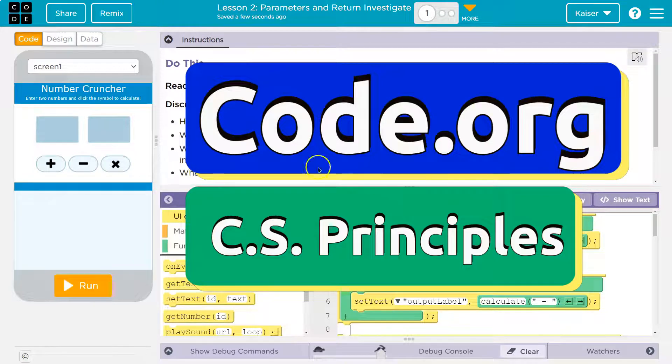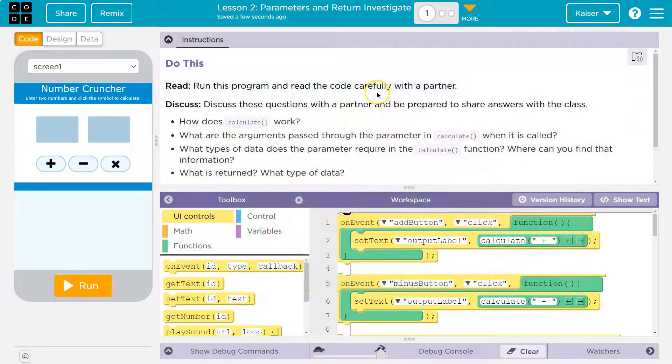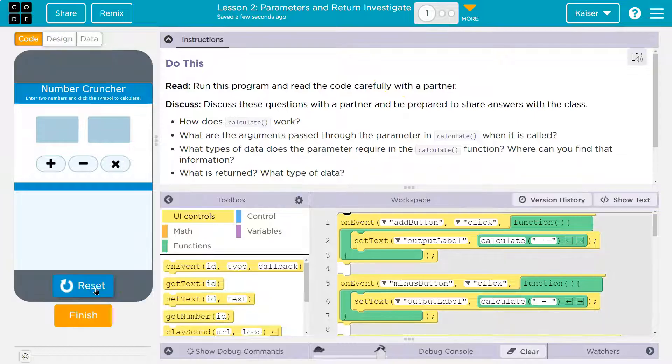This is code.org. Let's see what we're doing. Do this: run this program and read the code carefully with your partner. Hi, person on the other computer side, my partner. Thanks. Let me hit run. Boom. I hit run and it does nothing.